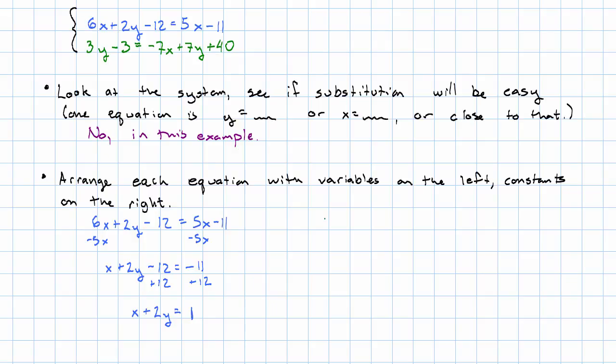Second equation. 3y - 3 = -7x + 7y + 40. Let's see. We'll add 7x to both sides. These are not like terms, so we just have 7x + 3y - 3 = 7y + 40.